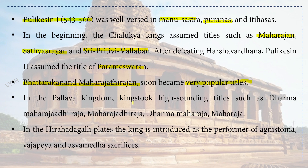In the Pallava kingdom, kings took high-sounding titles such as Dharma Maharajadirajan and Maharajan. In the Hirahaddagalli plates, the king is introduced as the performer of Agnistoma, Vajapeya and Ashwamedha sacrifices. These sacrifices have been explained in the Rigvedic chapter.